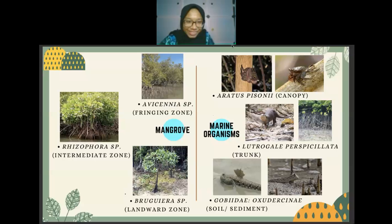For marine organisms, the first is Aratus pisonii, commonly known as the mangrove tree crab, which lives in the canopy of mangroves. Its most common food source is the red mangrove, Rhizophora mangle, but it also feeds on leaves of black and white mangrove. The crab consumes leaves by scraping their surface, leaving behind visible damage. It also preys on small arthropods as a supplement to its main diet.